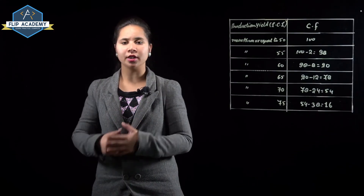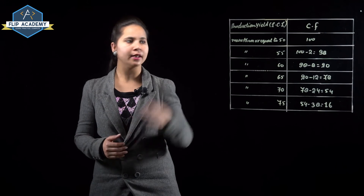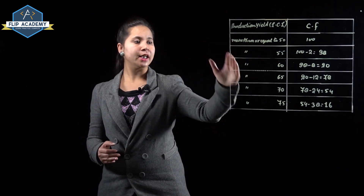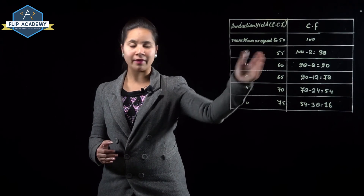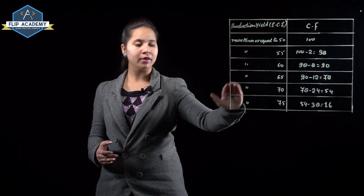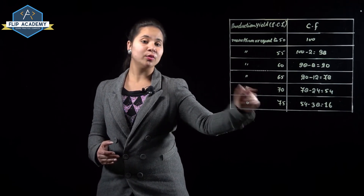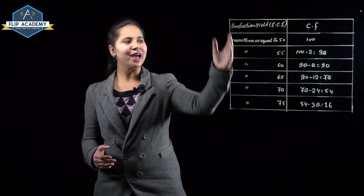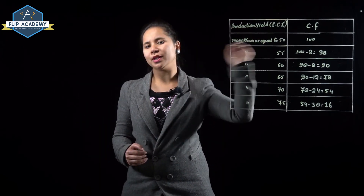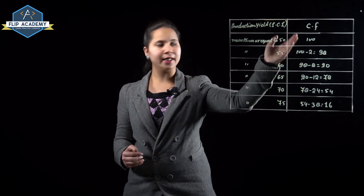We convert the given frequency distribution to a more than type cumulative frequency distribution table. For more than type, we use lower class limits: more than or equal to 50, 55, 60, 65, 70, 75. These represent production yield and lower class limit. Cumulative frequencies are found as follows: the first class is 100 (total farms).